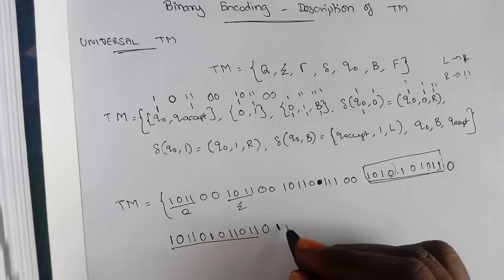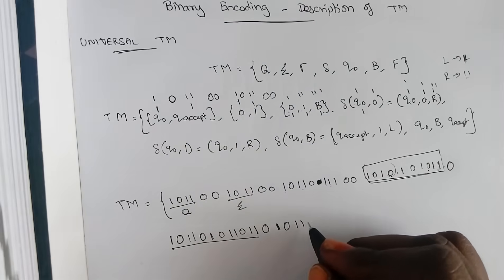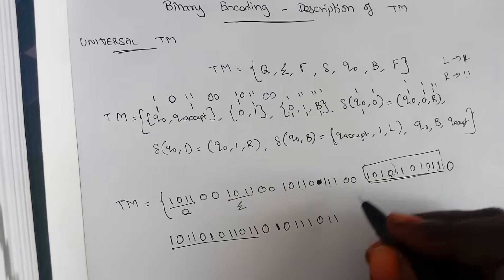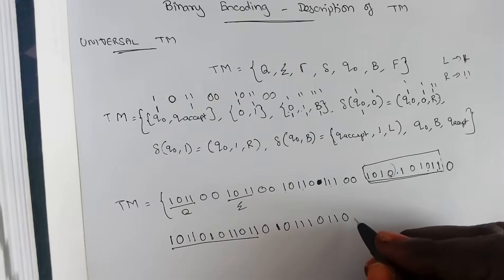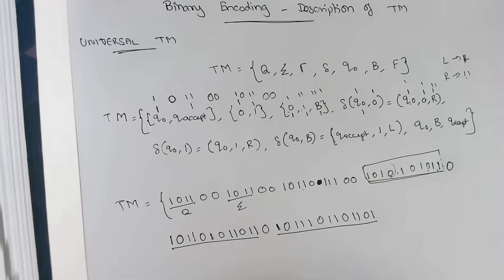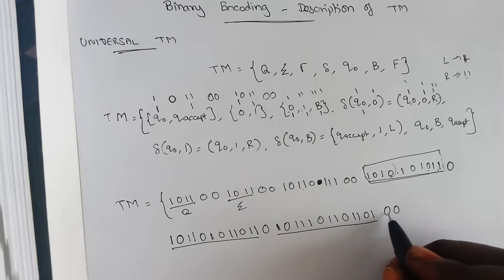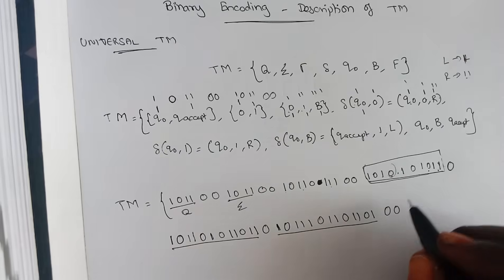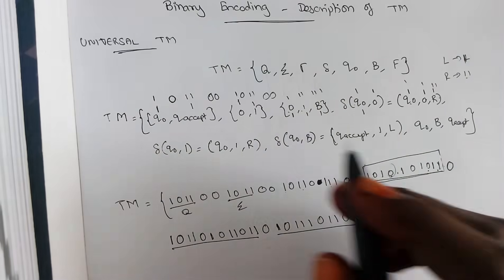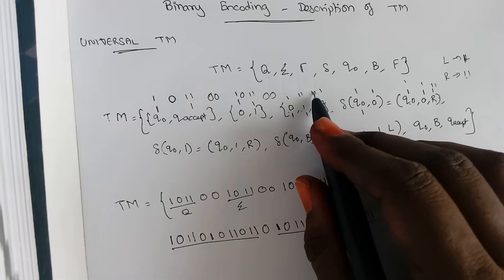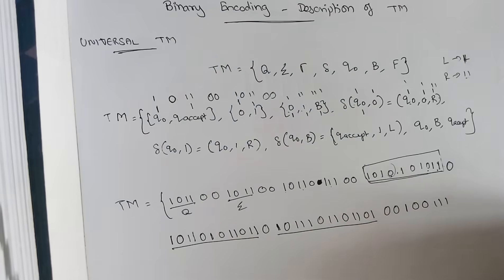For the third transition: q0 takes the value of one, separated by blank symbol with the representation of three ones, separated by q_accept taking the value of two ones, separated by one one taking the value of two ones, and the left side move takes the value one. So this is your third transition. We have three transitions as a whole described here. With this, the transitions end — use two zeros to represent that. Next is your starting state: q0, represented as one, separated from the blank representation of three ones.